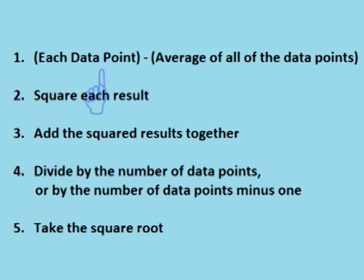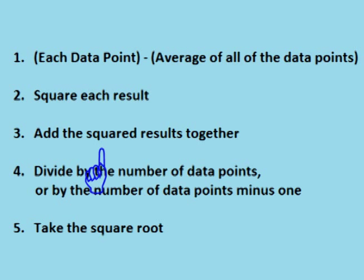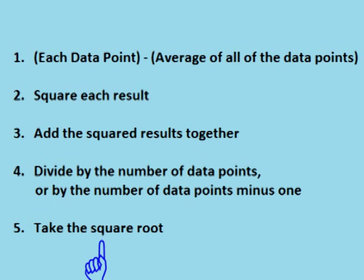So again, we take each data point and subtract from it the mean or average of all the data points. We square each answer, then we add all of the squared answers together. We then divide the total by the number of data points — or the number of data points minus one — to get the average square distance from the mean, also known as the variance. We take the square root of that to get the standard deviation.